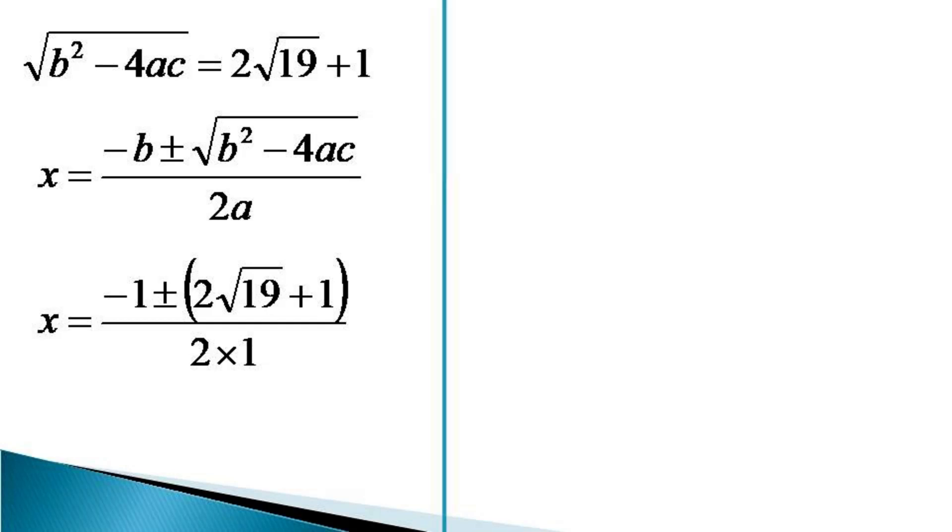The first root comes by taking the positive sign and it is equal to (-1 + 2√19 + 1)/2. In the numerator, -1 and +1 cancel each other and x comes equal to √19.